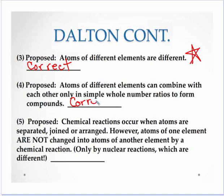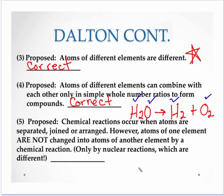Dalton proposed that atoms of different elements can combine only in simple whole-number ratios — that is correct and will lead us to chemical formulas, bonding, and chemical reactions. He also said chemical reactions occur when atoms are separated, joined, or rearranged; in other words, bonds are broken and bonds are formed. That's absolutely true. For example, if you take water and break it into hydrogen and oxygen, you've broken bonds, formed new ones, and produced new chemical and physical properties.